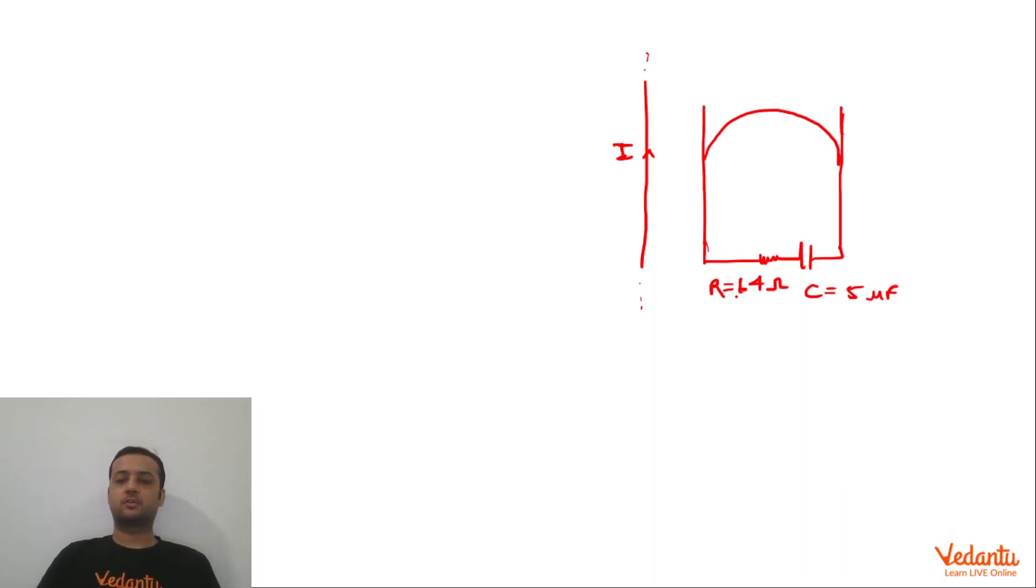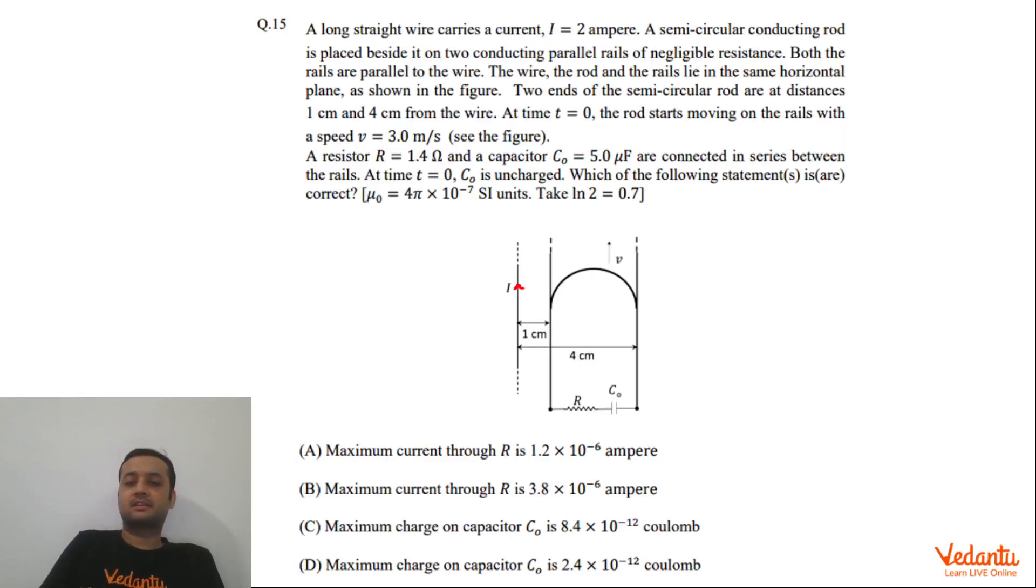At t equals zero the capacitor was uncharged. This distance has been given as 1 centimeter and this distance has been given as 4 centimeters. Now it's said that the semi-circular wire starts moving at a speed of 3 meter per second. So we have to find the maximum current in the loop and the maximum charge on the capacitor.